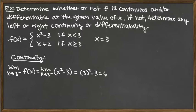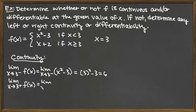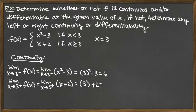Even though it's the left limit, x squared minus 3 is continuous everywhere, so the left limit matches the full limit — that's why we can just plug in 3 directly. The limit from the right is going to use the other piece. When x is slightly bigger than 3, we use the line x plus 2, which is also continuous everywhere. So the right-hand limit is just 3 plus 2, which equals 5.